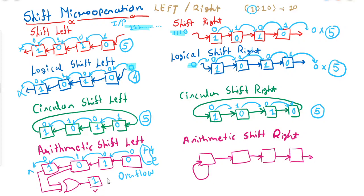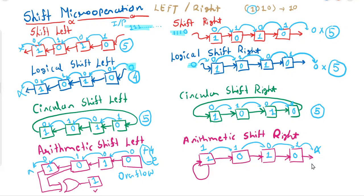For arithmetic shift right on 1010: here I have drawn a self-directed arrow on the MSB, meaning we keep the sign bit as it is and propagate all bits to the right. This 1 stays as 1, this 0 shifts here, this 1 shifts here, and this 0 is discarded. Previously the value was minus 2; after performing arithmetic shift right the new value is 1 and 4 giving 5 with a negative sign, so minus 5.